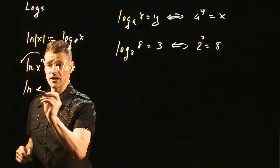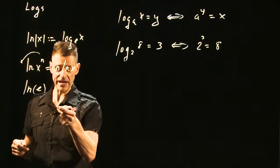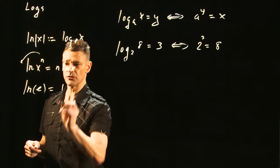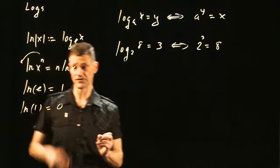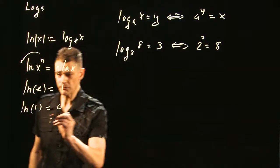The logarithm to the base, in this case e, is always equal to 1. The log of 1 is always equal to 0, regardless of the base. Here are some more properties.